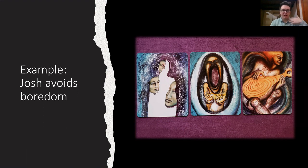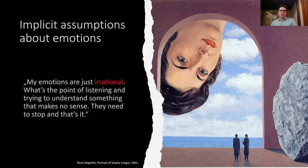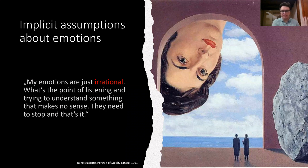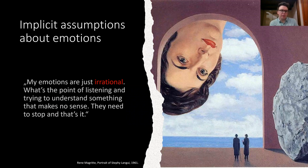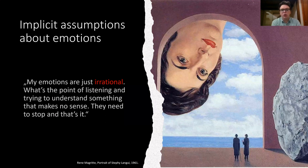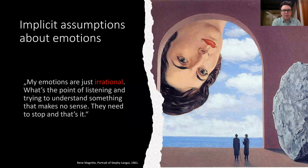Let's talk about what specific ideas allow people to avoid emotions — the implicit assumptions about emotions that lead to avoidance — and what the repercussions of this are for therapy or personal development. Here's one example from a client: 'My emotions are just irrational. What's the point of listening and trying to understand something that makes no sense? They need to stop, and that's it.' The underlying assumption here is that emotions are irrational.